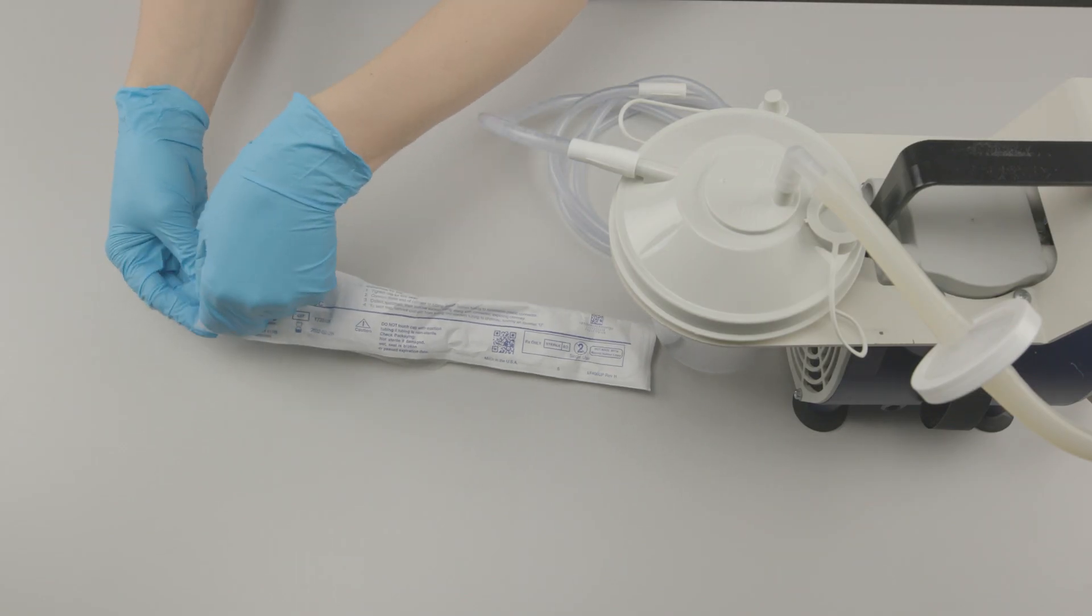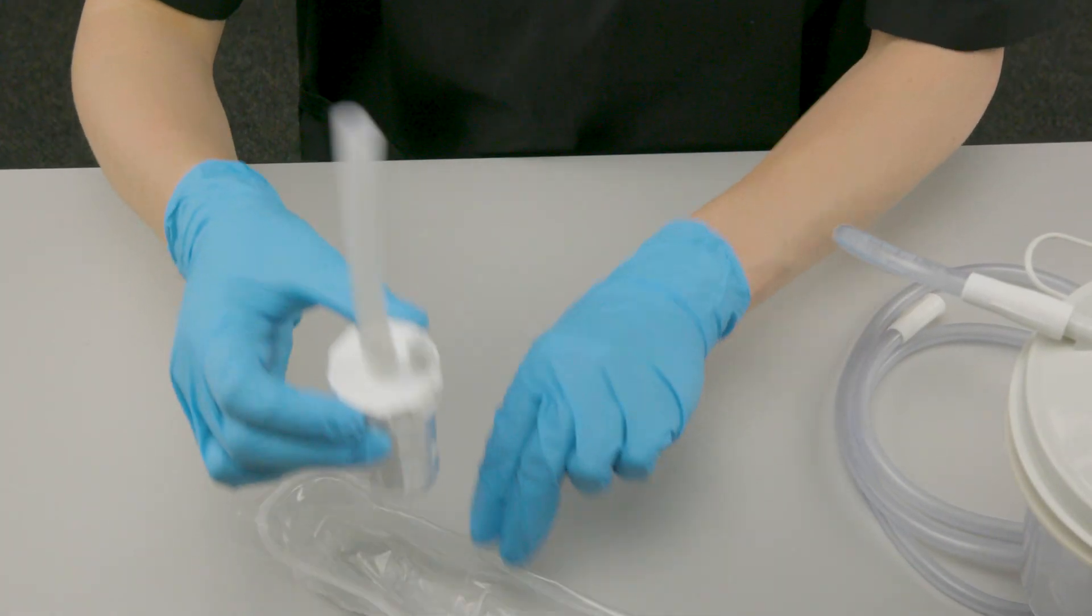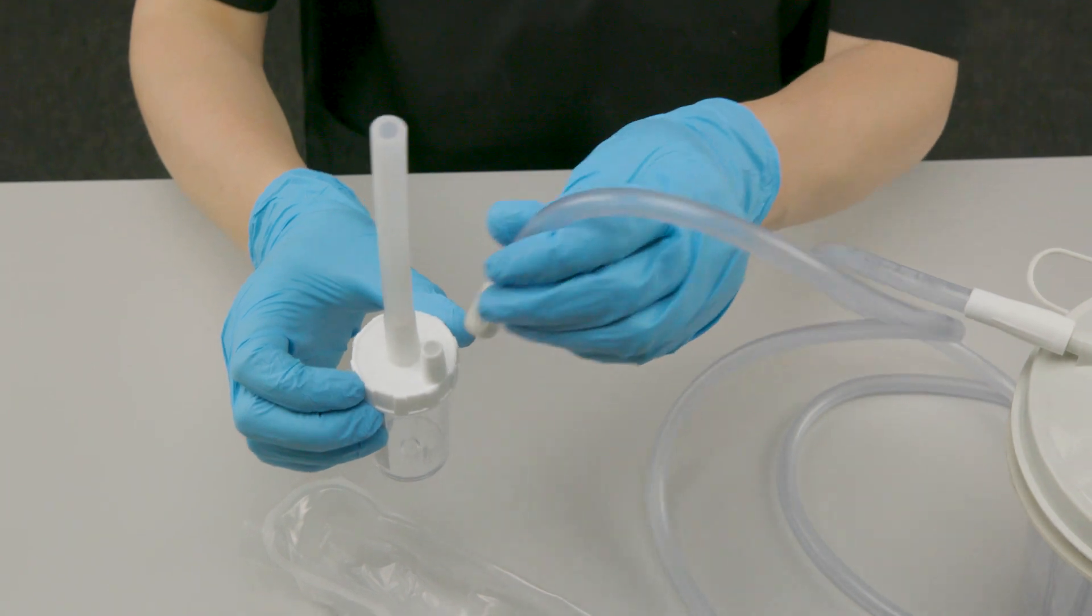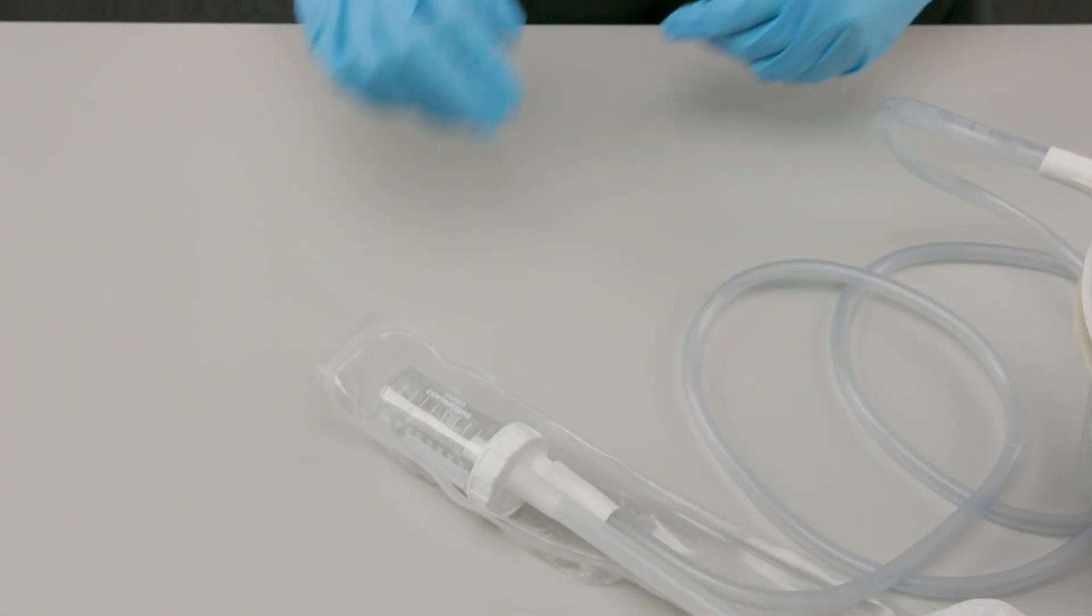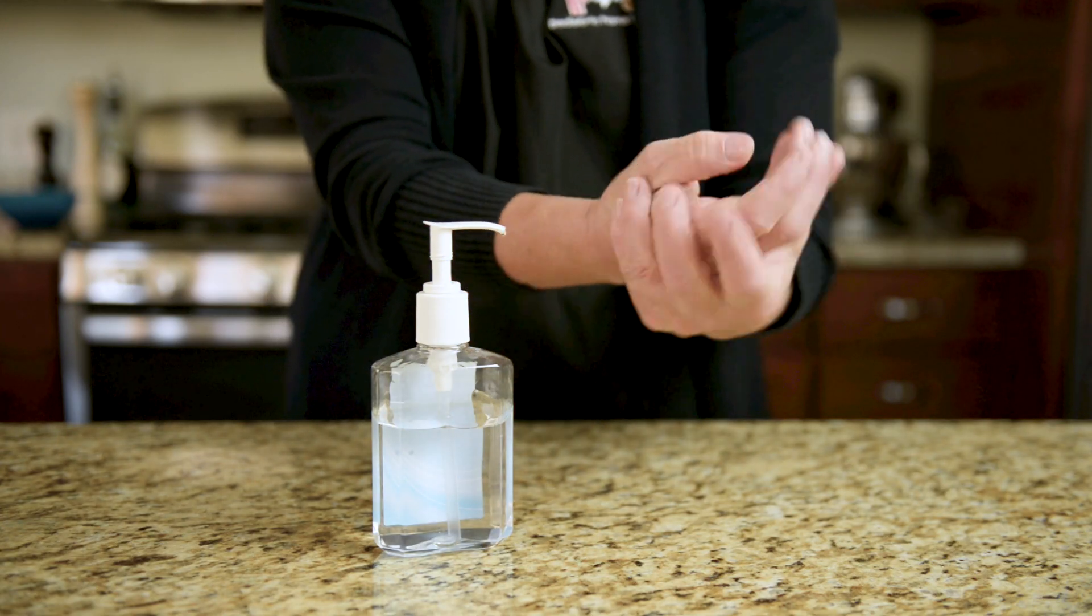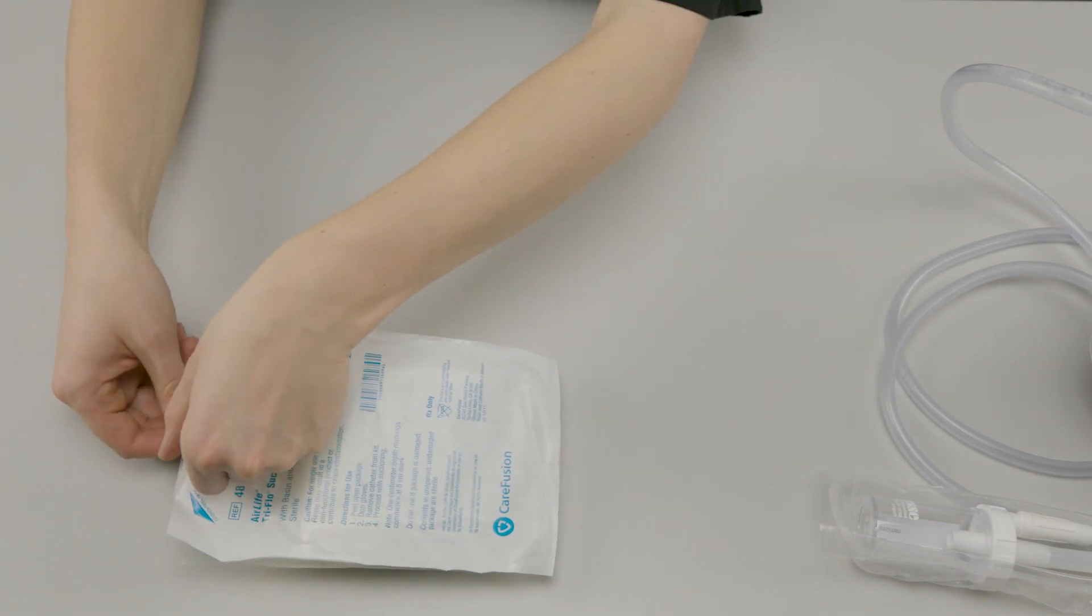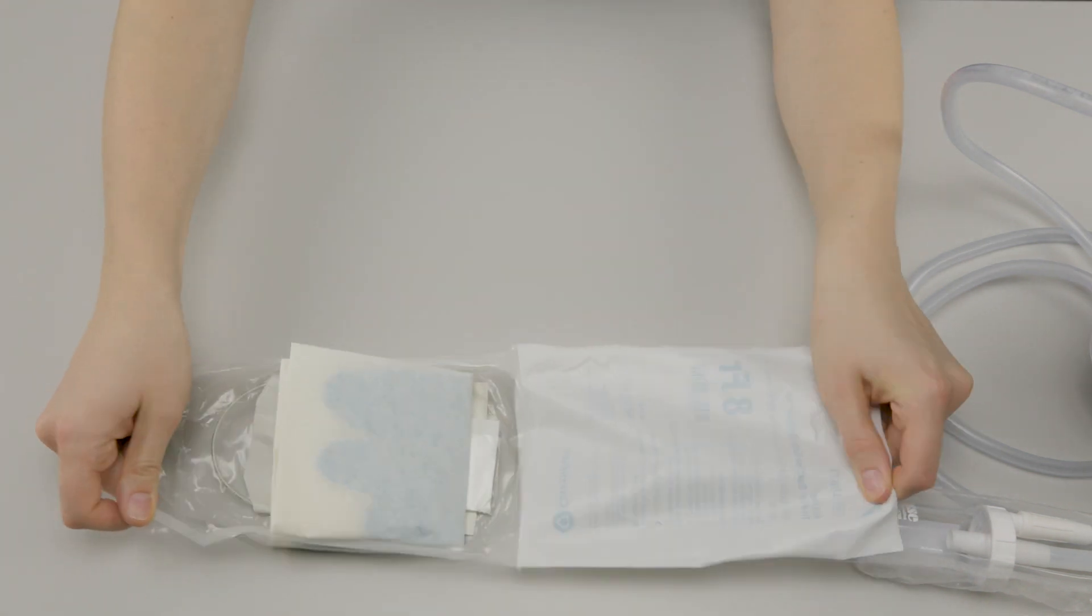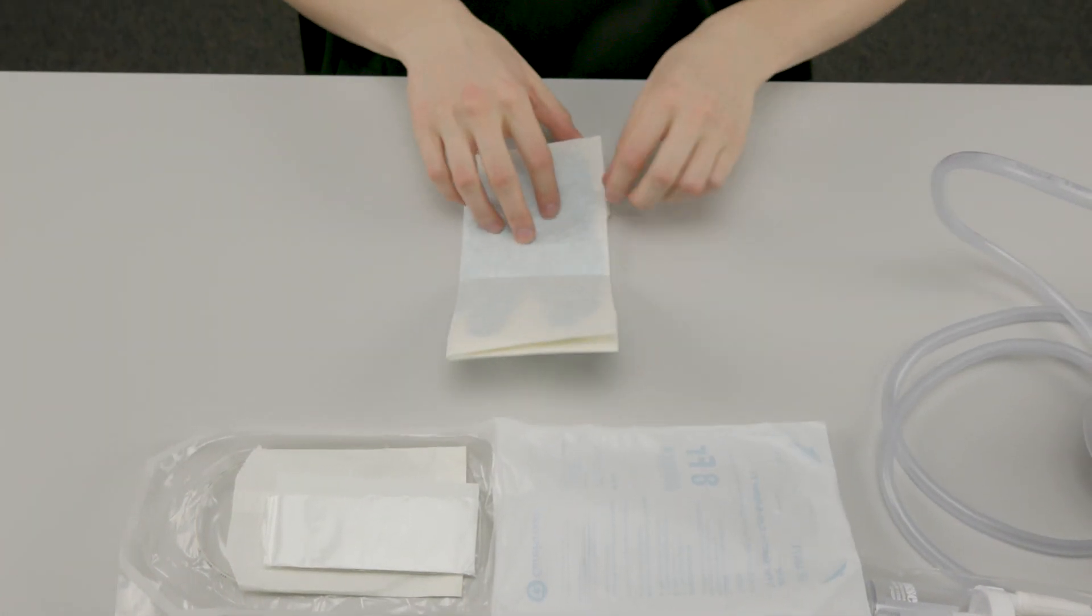Attach the specimen trap to the suction tubing. Remove the non-sterile gloves and clean your hands. Prepare the suction catheter kit using sterile technique. For a refresher on sterile suction technique, click here to watch the video.